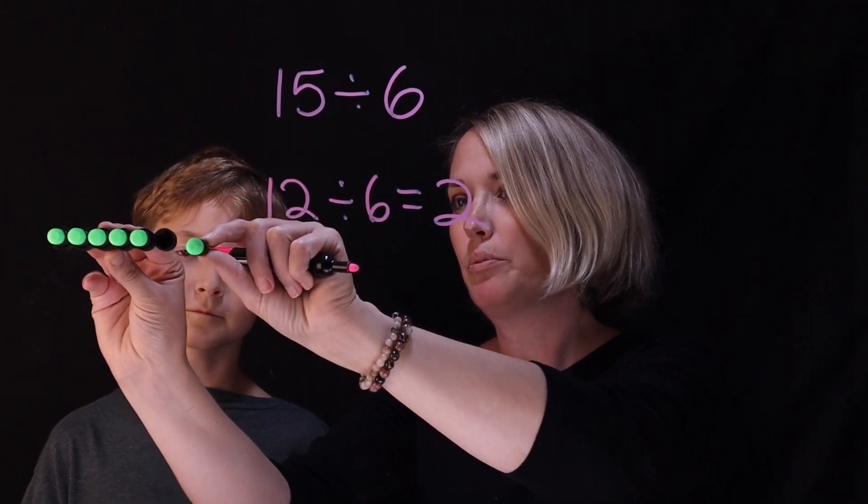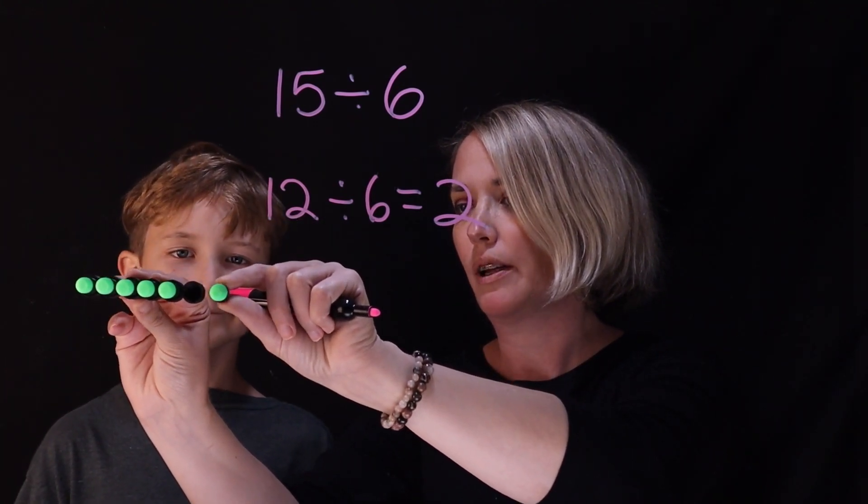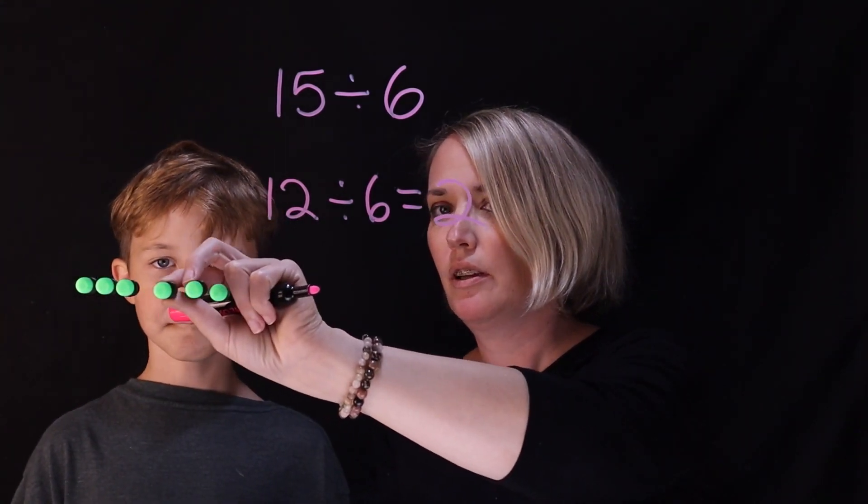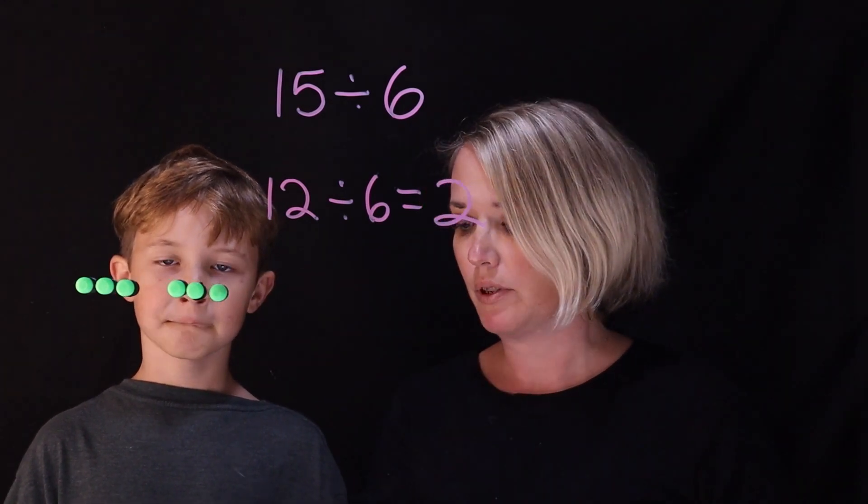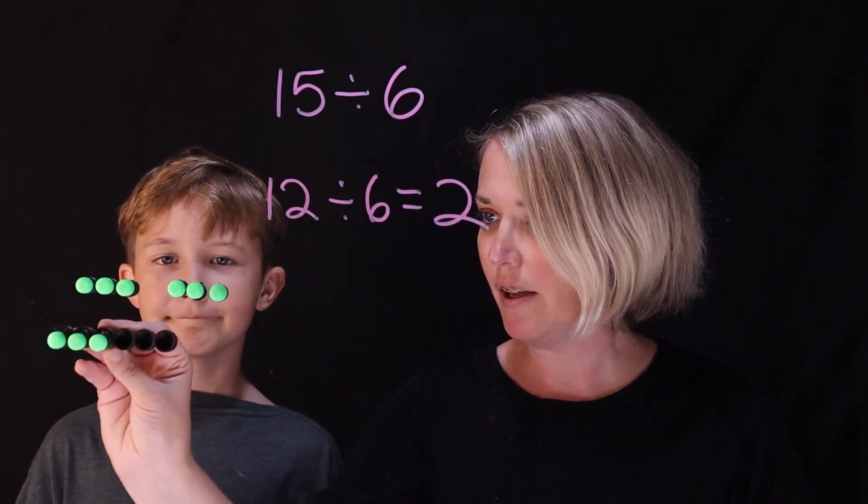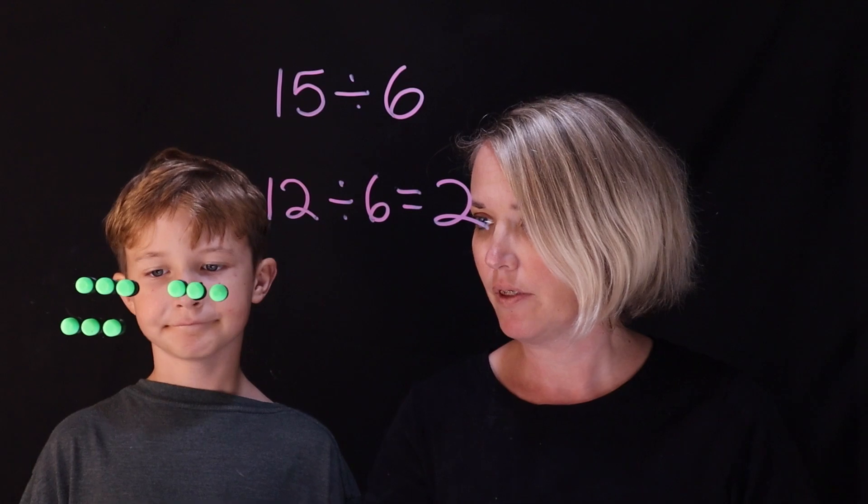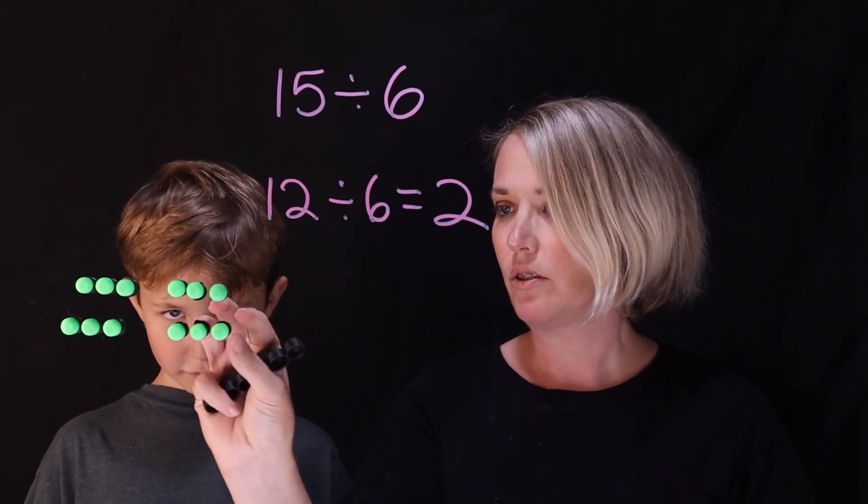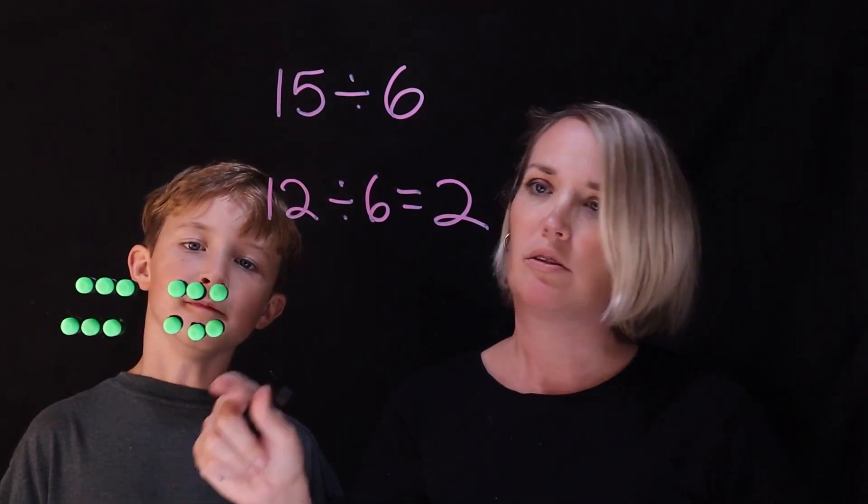Yeah. So we'll bring out 2 groups of 6. So there's 1 group of 6. And we can even move them over like this so people see it. And we've got 2 groups of 6. And we've got 12 in total.